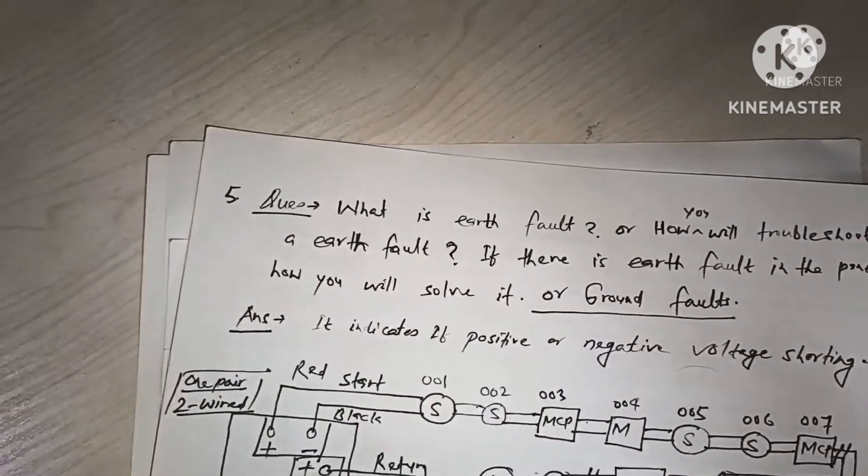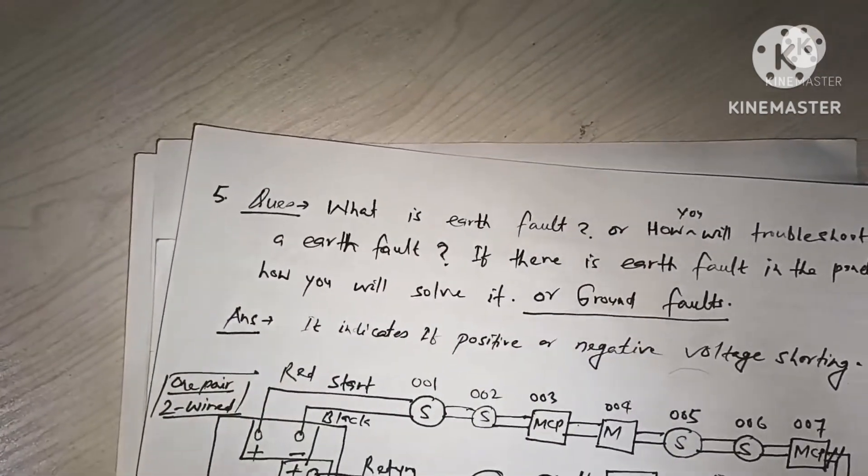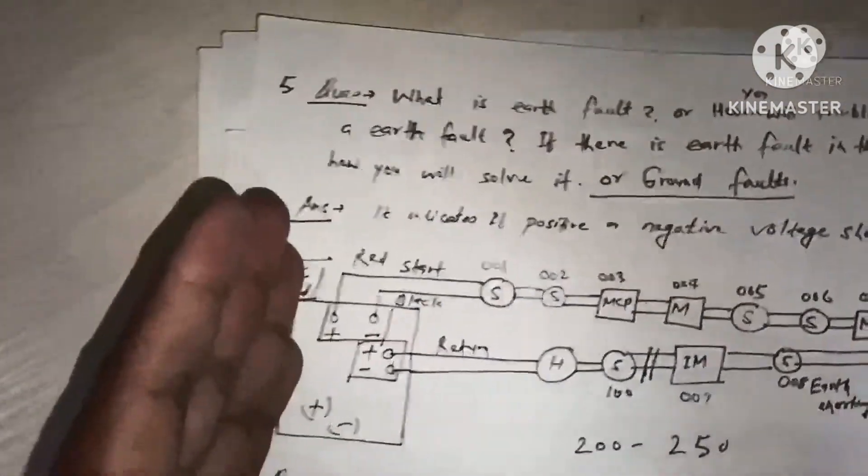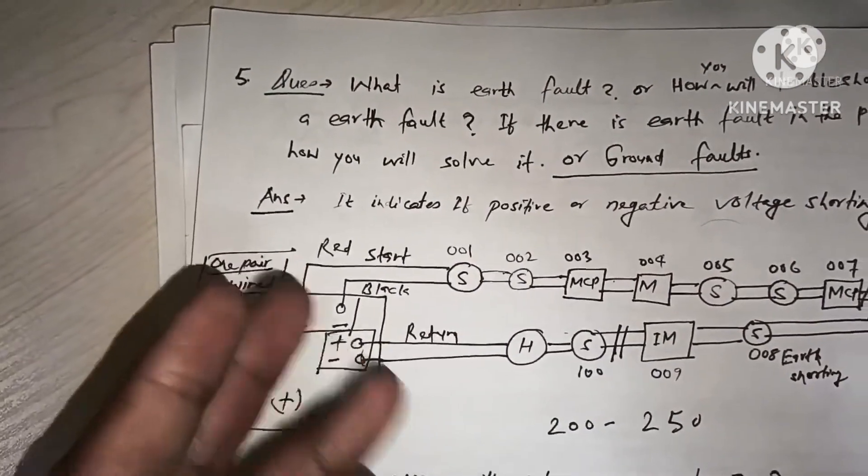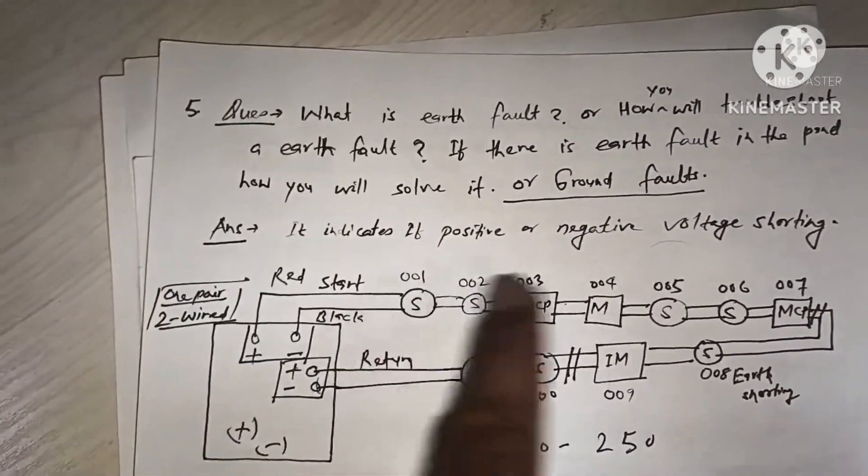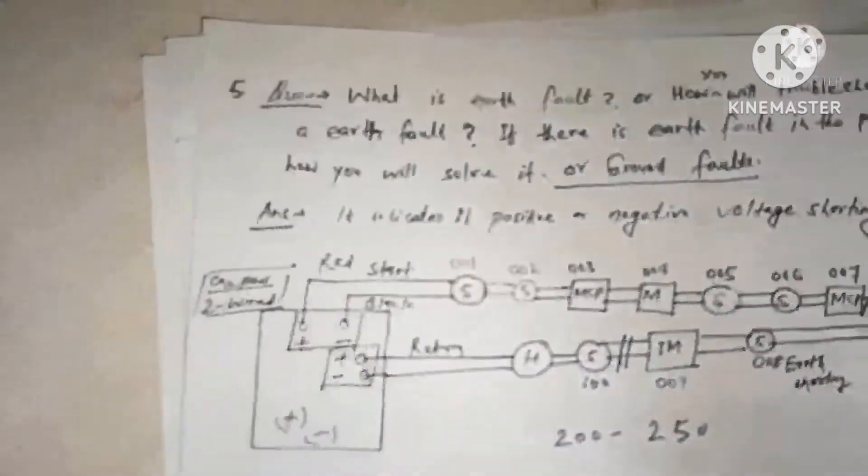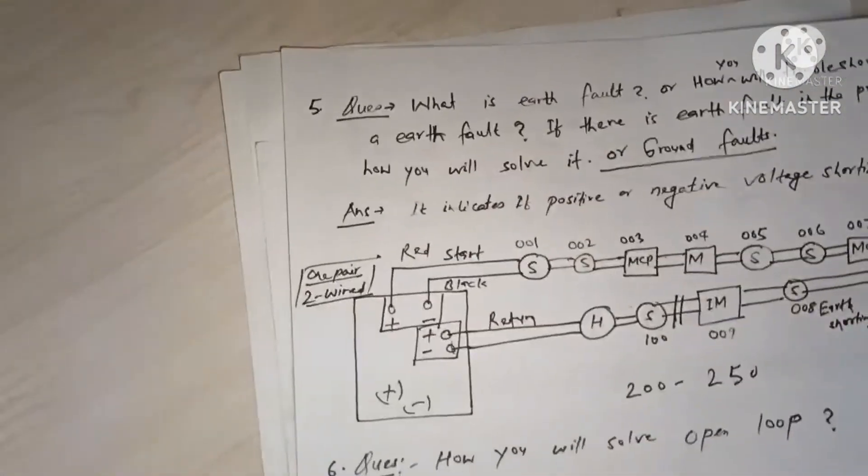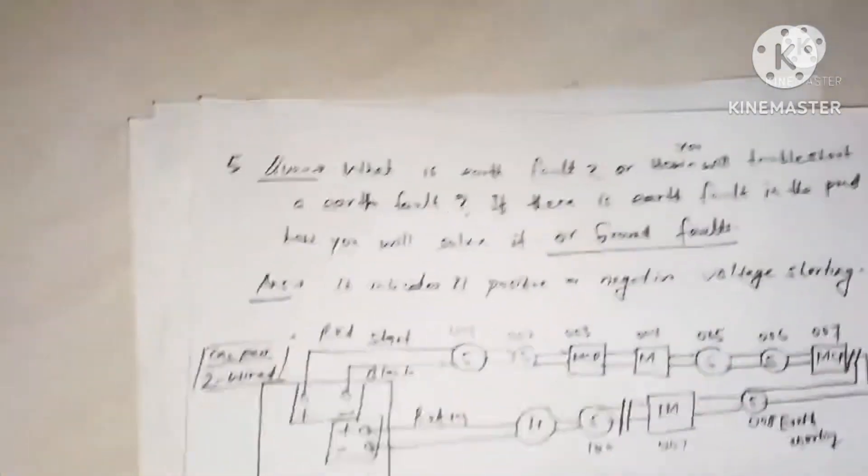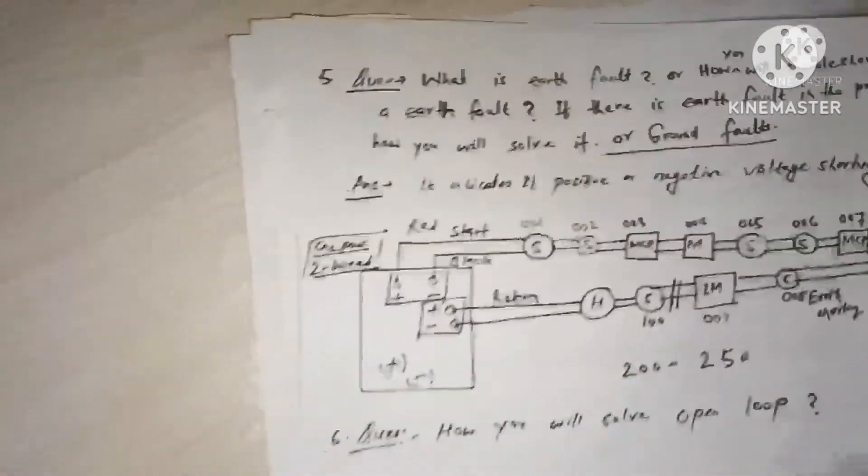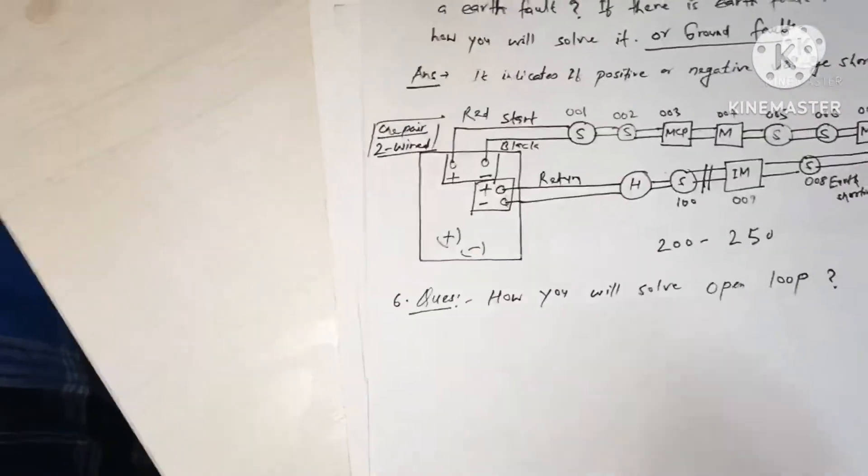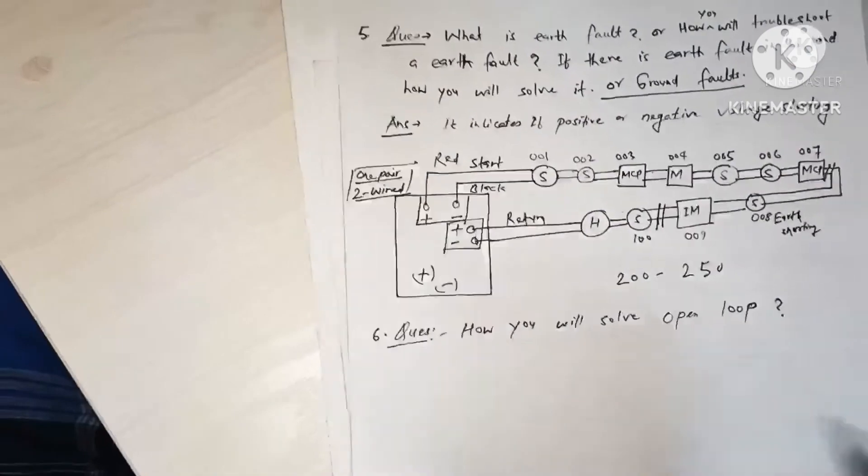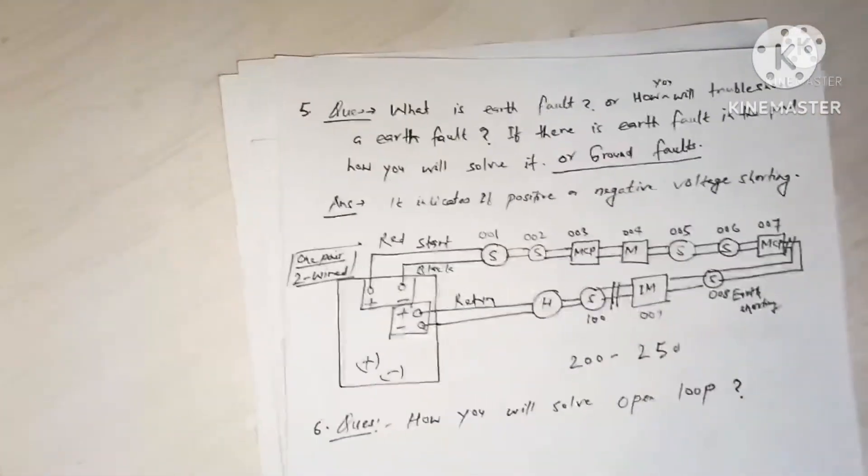Sometimes this earth fault also comes because of, you know, the reasons of earth faults like if there is leakage of water on the devices, then maybe this also comes ground fault. Short ground faults also - if you have, like one case in my one case, at one site our remote indicator cable was laying on the metallic surface of the false ceiling. That's why ground fault was coming.